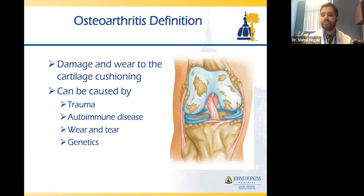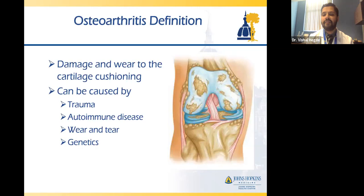Arthritis can also be caused by prior trauma to the knee, old fractures, or broken bones. It can be caused by genetics — if a parent has had knee arthritis or a knee replacement, you are more likely to be predisposed. And patients with autoimmune diseases like inflammatory arthritis or rheumatoid arthritis are at higher risk of that inflammatory disease affecting the joints and causing arthritis.